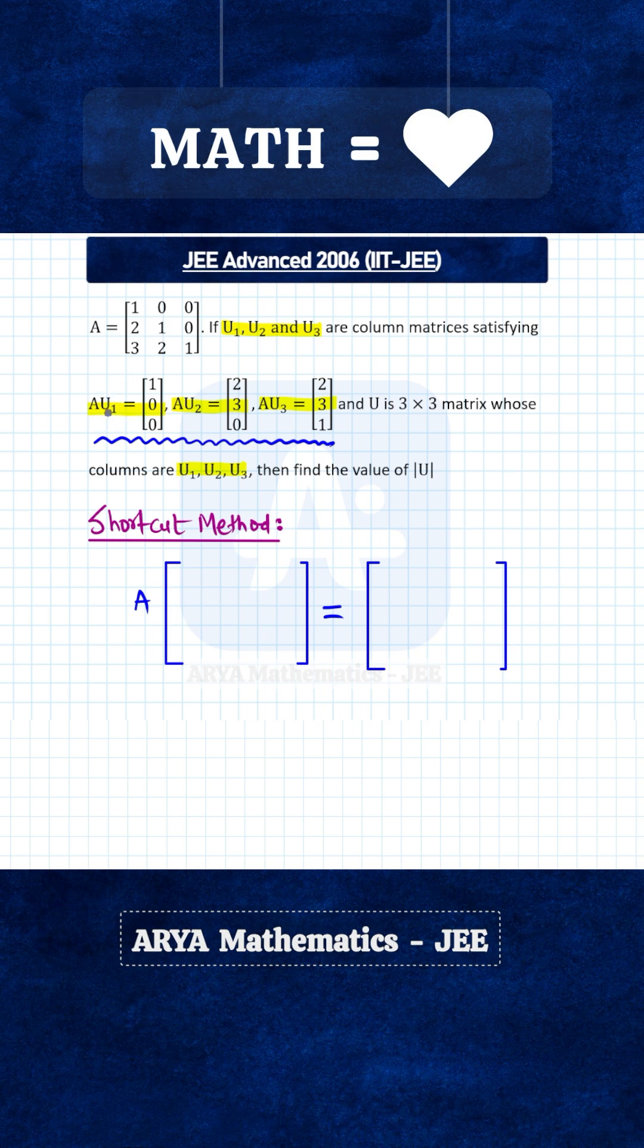Let us say u1 is a column matrix where the elements are x1, y1, and z1, so we can write A into first column x1, y1, z1, and the right-hand side will be 1, 0, 0.